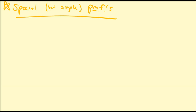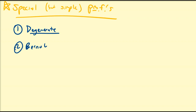Hello there. In this video, we're going to briefly discuss three special but simple probability mass functions. The first PMF is the degenerate PMF, the second is the Bernoulli probability mass function, and the third is the uniform distribution. We will discuss what these distributions represent, a couple of examples of where they can be used, and we'll also describe some properties — namely the expectation and variance of these random variables.